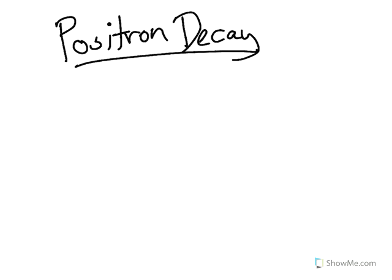Welcome back to Chem with Go. Today we're going to take a look at positron decay. And positron is kind of interesting because it's sort of the antimatter of an electron.